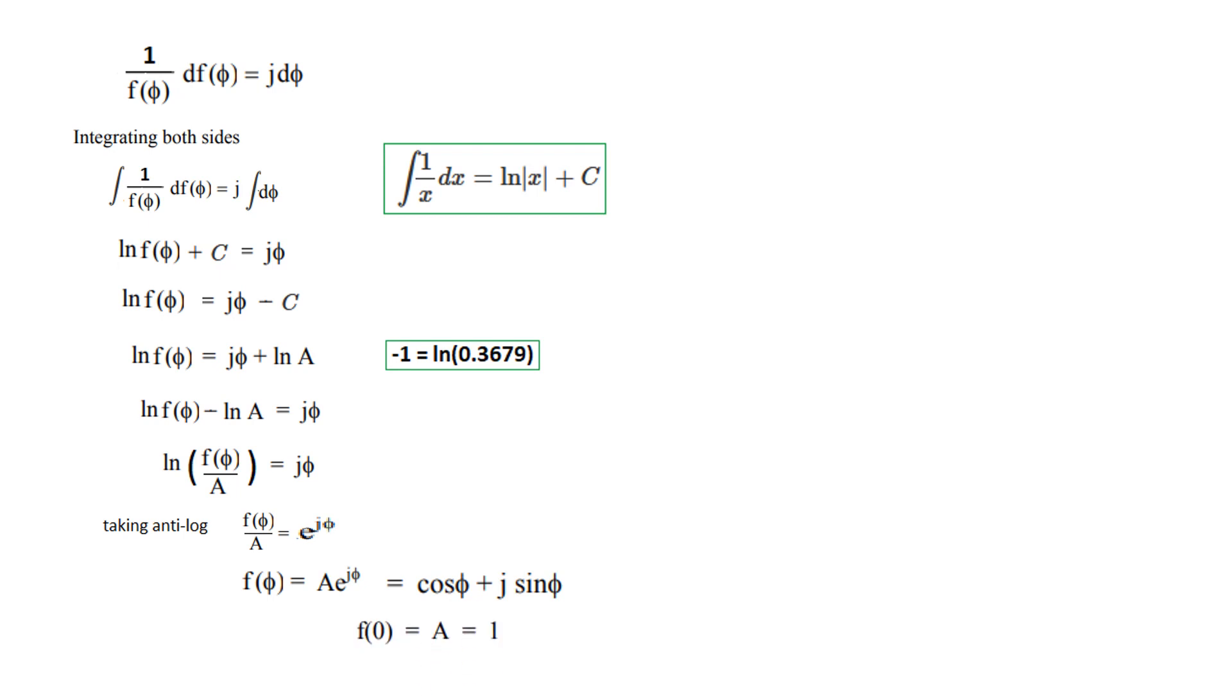Now if you put φ equal to 0, so f(0) will be e raised to the power 0 which is equal to 1, so this will be A. And here cos(0) is 1 and sin(0) is 0, so we will get 1.